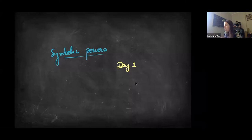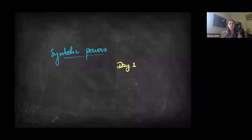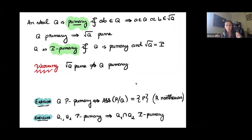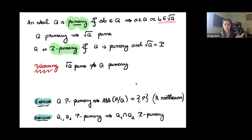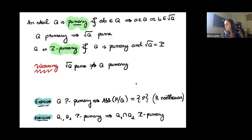Today I want to start with background: what are symbolic powers? The first few things we need to remember are things we already know, so I'll go very fast in the beginning. These are recall moments. First, I need to recall what a primary ideal is. Being primary is a generalization of being prime: an ideal is primary if when you have a product in it, if one of the terms is not in the primary ideal, the other must at least be in the radical.